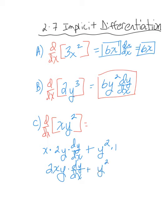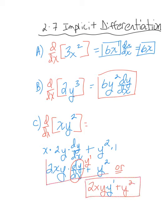Plus y² times 1 is just y². Many people replace dy/dx with y prime, since that means the derivative of y. So you could write your answer as 2xy·y' + y². Either notation — dy/dx or y prime — represents the derivative of xy².